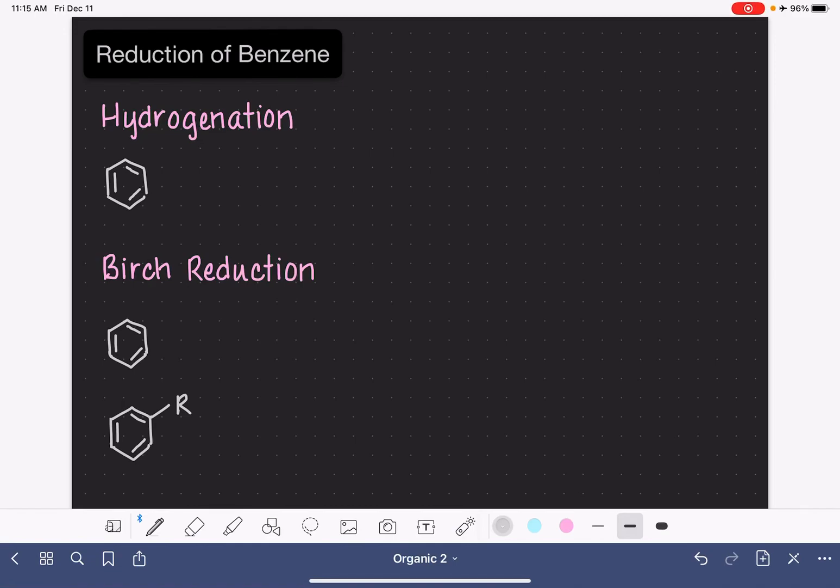Even though the benzene molecule is exceptionally stable, it is possible to do a reduction reaction on the benzene ring itself. There are two different ways that we can reduce the benzene ring.